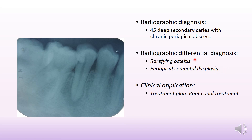The differential diagnosis would be rarefying osteitis or periapical cemental dysplasia. Rarefying osteitis is generally associated with periapical disease in a decayed tooth, very similar in appearance and etiology — it is purely a radiology term. Periapical cemental dysplasia is differentiated because the tooth is generally vital, whereas in our case the tooth has caries and is non-vital.